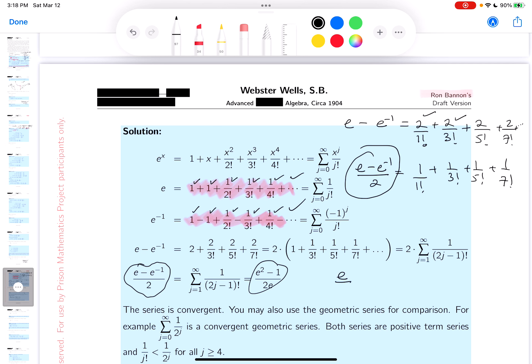This is e over 2 minus 1 over 2e. The common denominator would be 2e. What do you get there? E squared minus 1. It's convergent. It's a convergent series. Thank you.